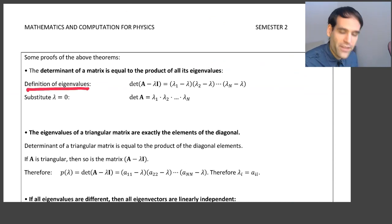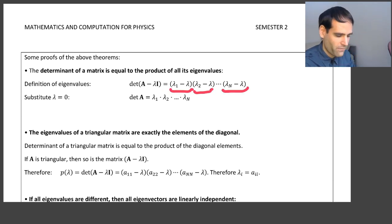By definition of the eigenvalues, the determinant of A minus lambda I is equal to the characteristic polynomial whose roots are the eigenvalues. That's by the definition of eigenvalues. So now, just substitute lambda equals 0 in both sides of this equation, and on the left-hand side you end up with the determinant of A, and on the right-hand side you end up with the product of all of the eigenvalues. Nice and simple.